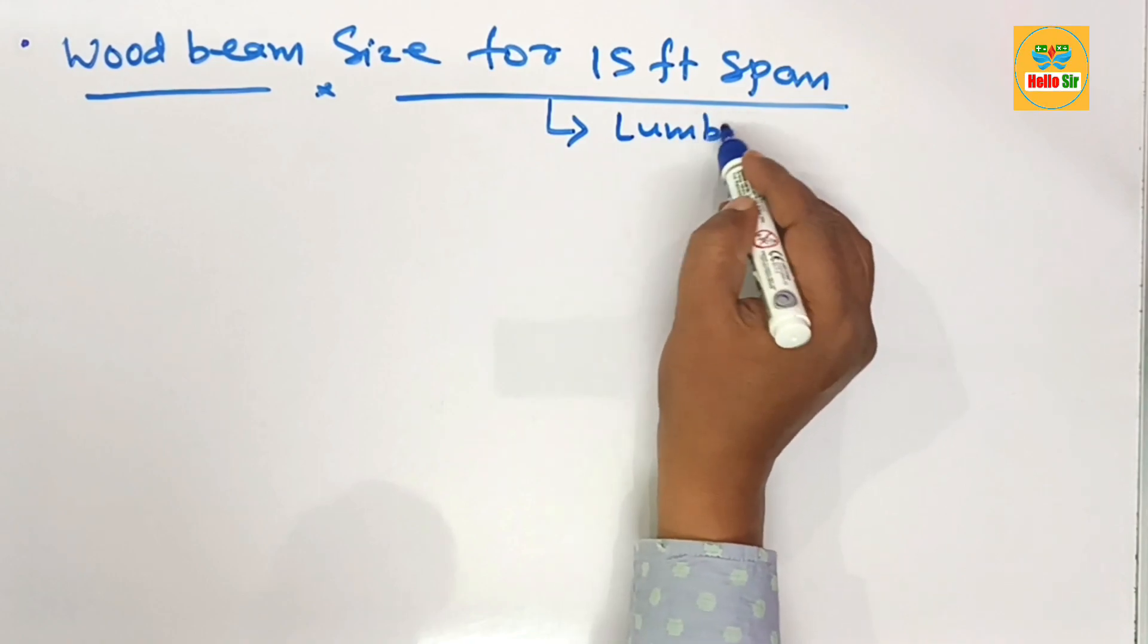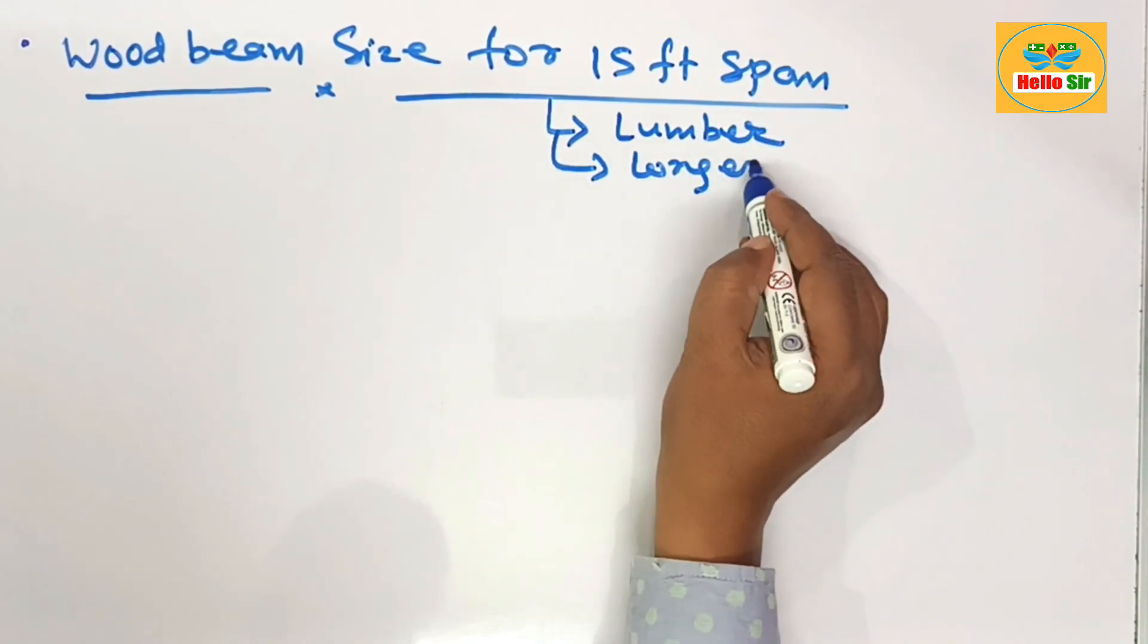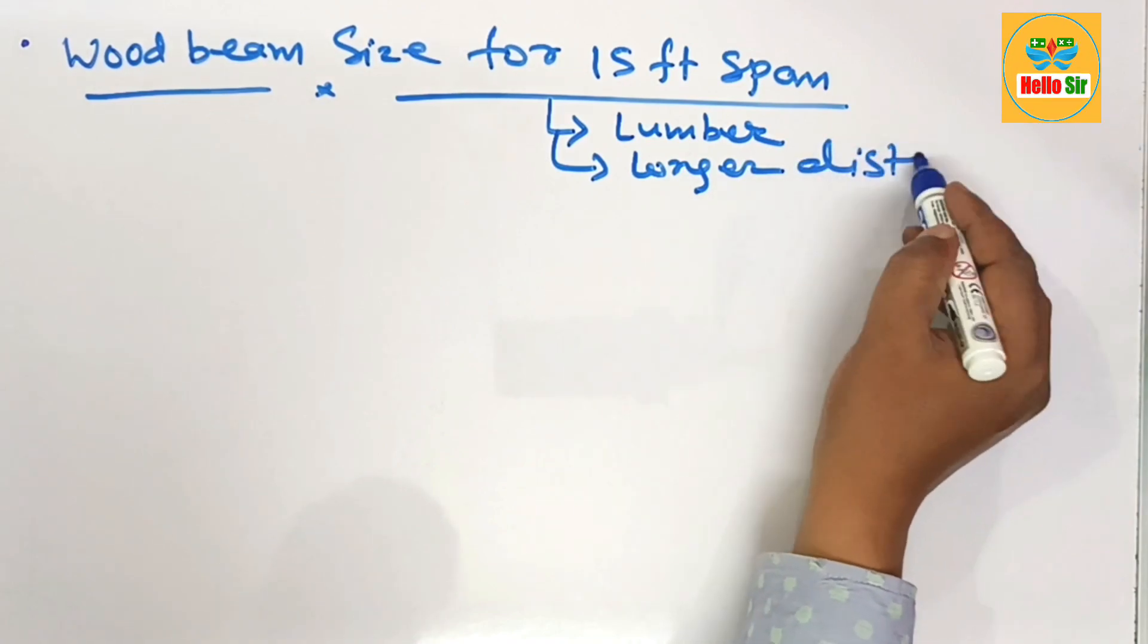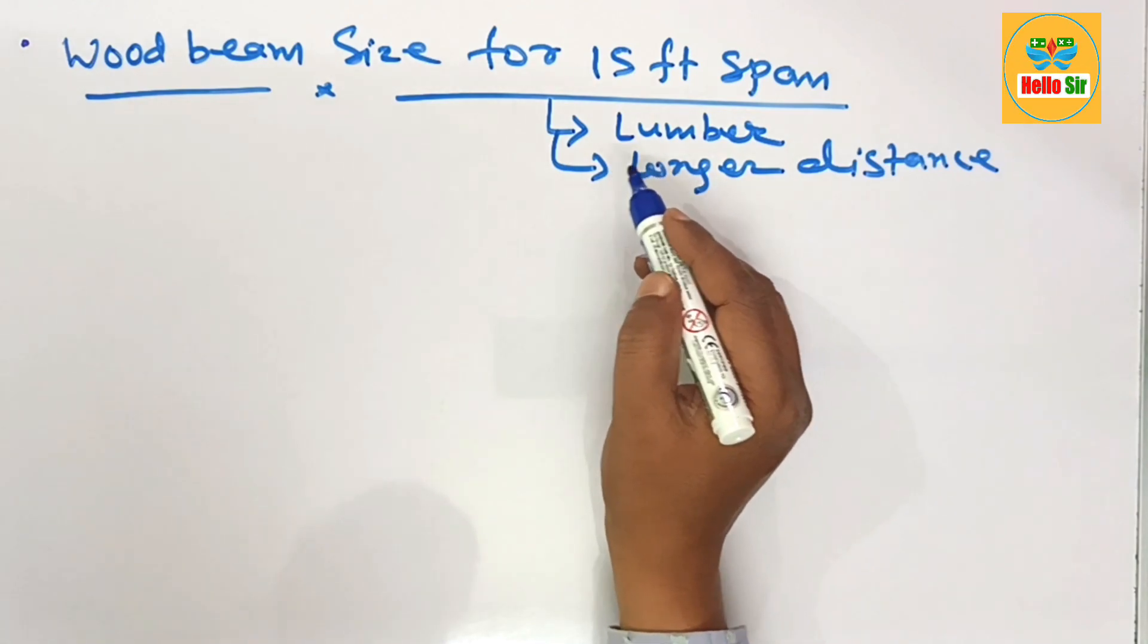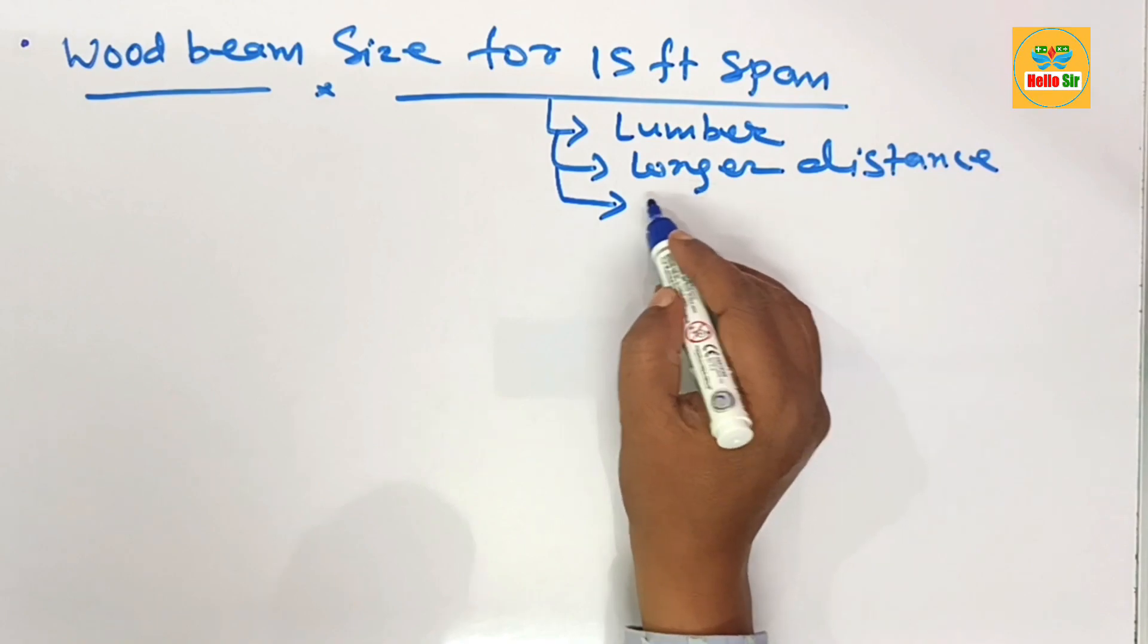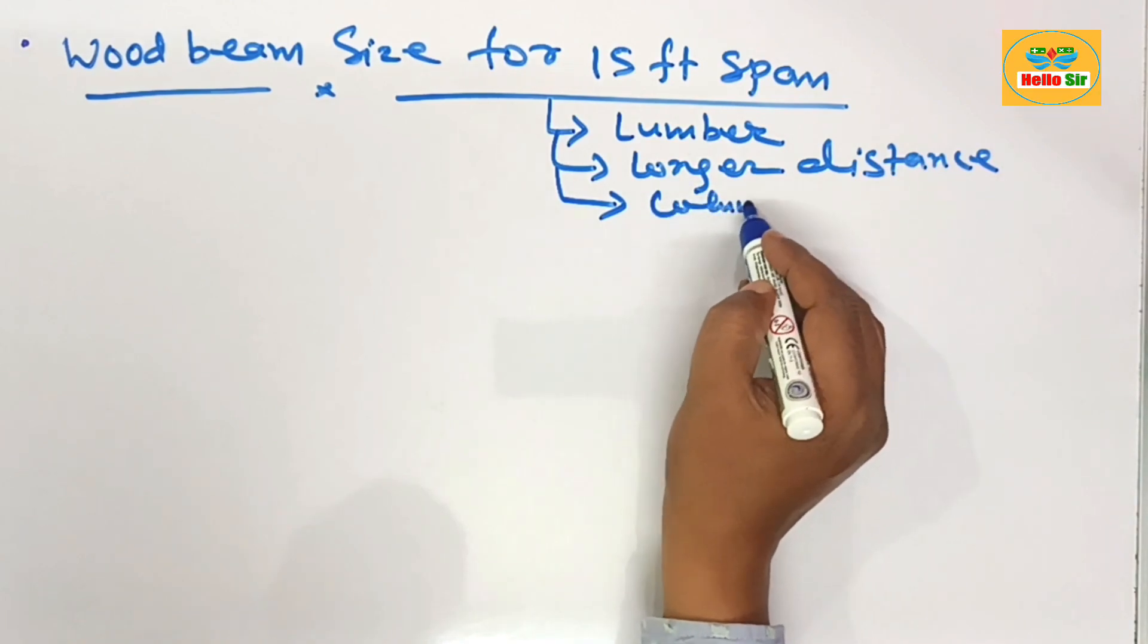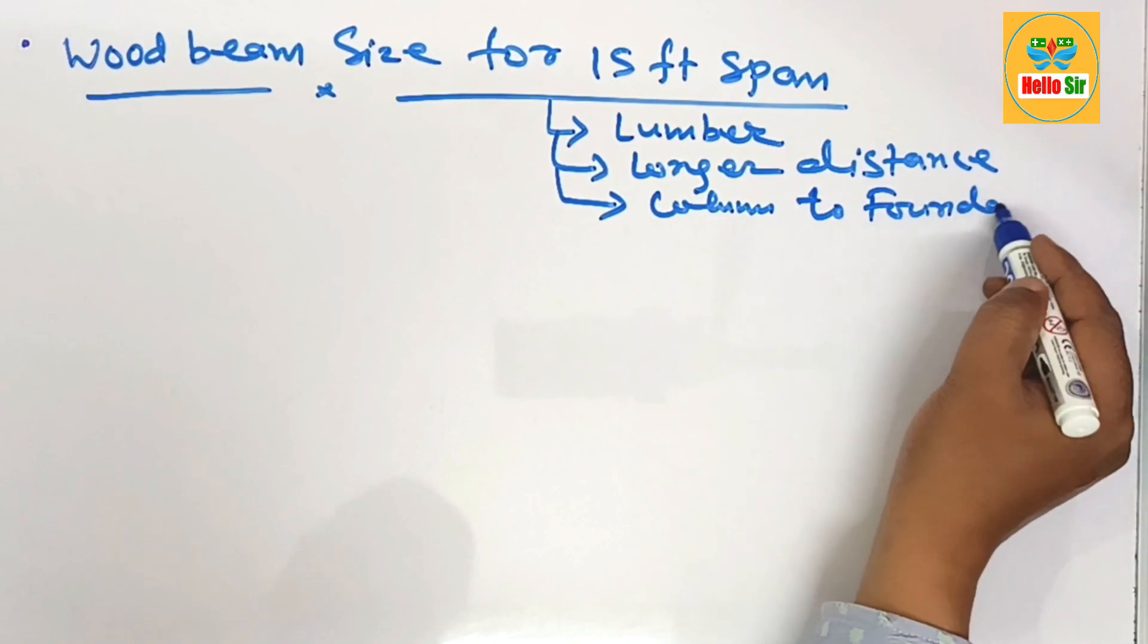Wood beams can support live load, dead load, and seismic load of the structure, transferring their weight down to the column and finally to the foundation. All the load is finally distributed into the soil.